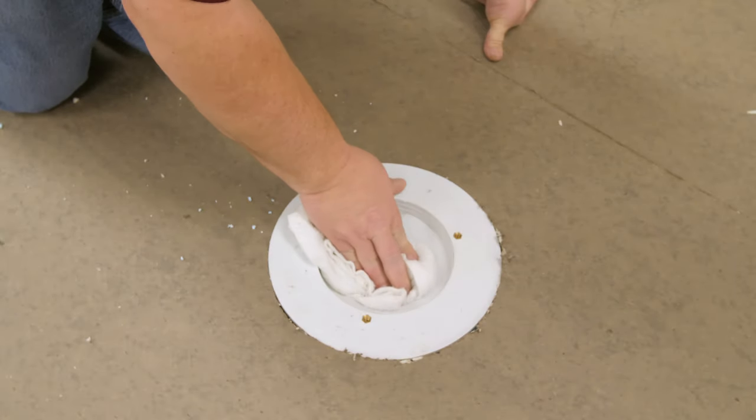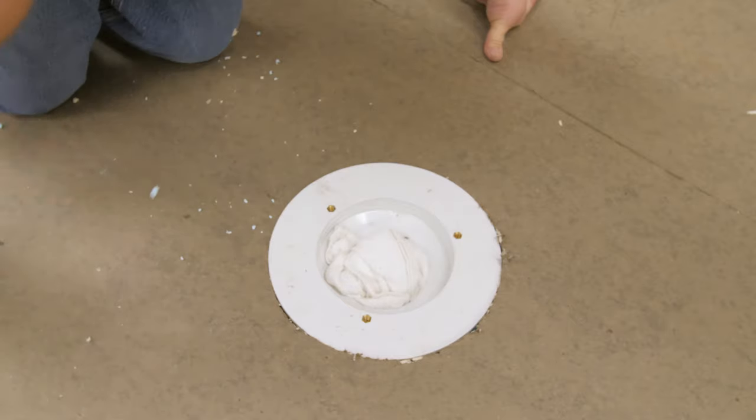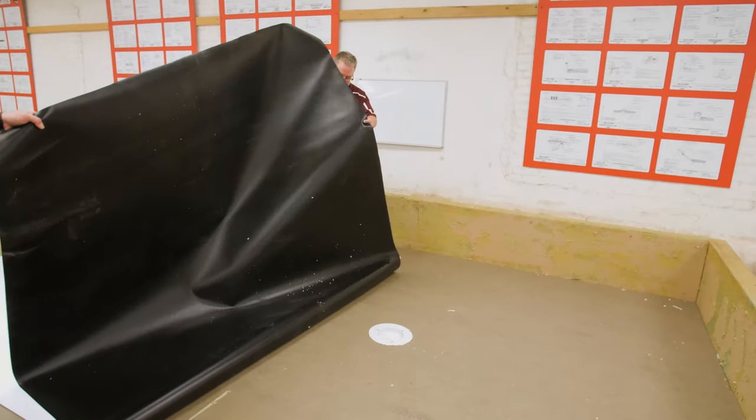Plug the drain leader at the drain bolt to prevent debris from entering the drain line. Roll field membrane over the drain bowl.